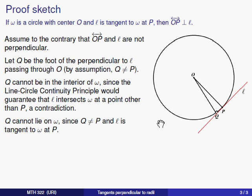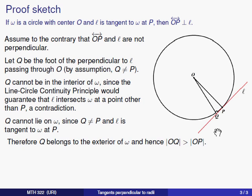Likewise, Q can't be on the circle, because then again the line L would pass through two points of the circle, and line L is supposed to be a tangent to the circle. That only leaves the case that Q belongs to the exterior of omega. By definition of exterior, this means that the distance from O to Q is greater than the distance from O to P. O to P was a radius, and segment OQ has to have a length greater than that because it's in the exterior.